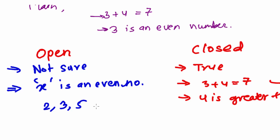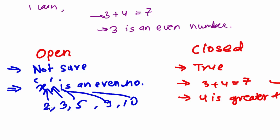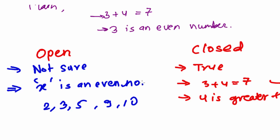X could be two, three, five, nine, ten — it can be any number. You don't know which number x is, so you don't know whether it is odd or even. You're not sure about it, and whenever you're not sure about something, that type of sentence is called an open sentence.